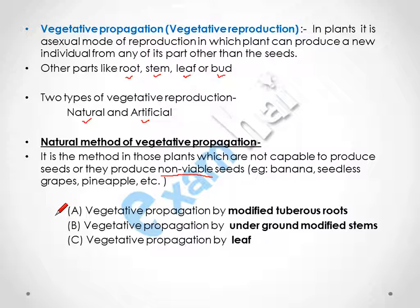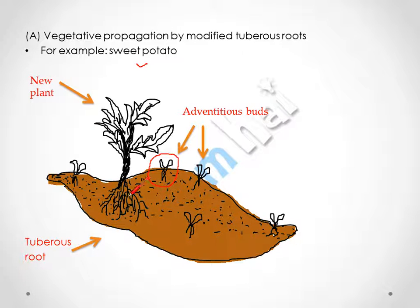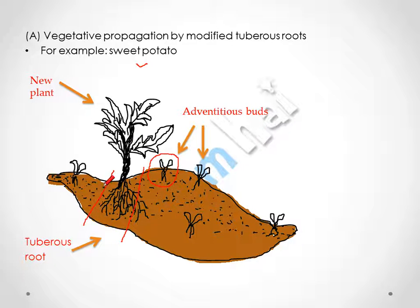Vegetative propagation by modified tuberous root — here we take the example of sweet potato. Buds appear on the sweet potato, and these buds will develop into a new plant. This new plant can be taken off and buried into the soil. The roots are buried into the soil, and the plant will grow into a new plant, with a new sweet potato developing in the roots.